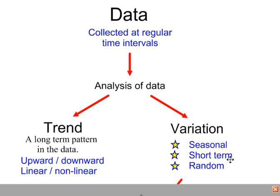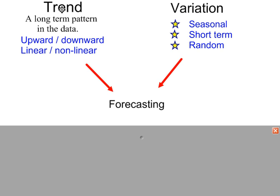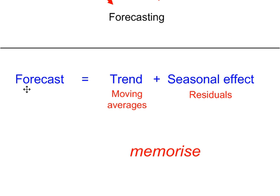Random variation is common to most time series. A combination of trend and variation can be used to forecast. A forecast is obtained by taking the trend line value, that's from the moving averages, plus a seasonal effect calculated from residuals. This is a basic formula that you should aim to memorize.